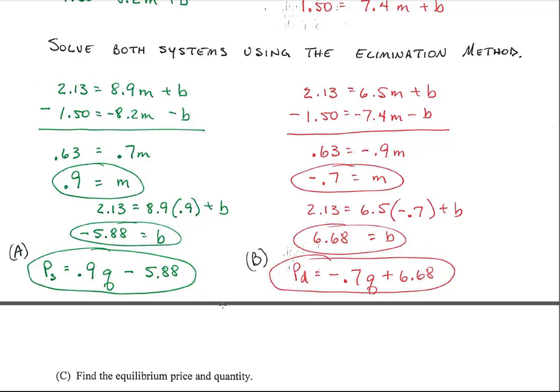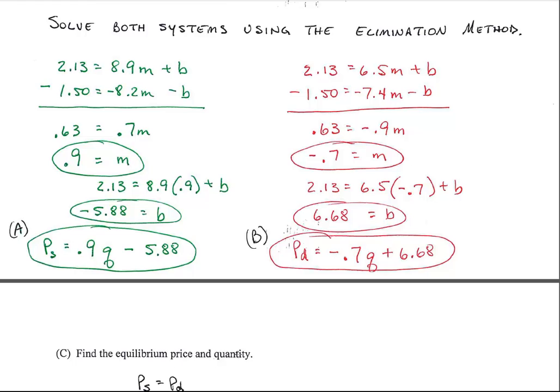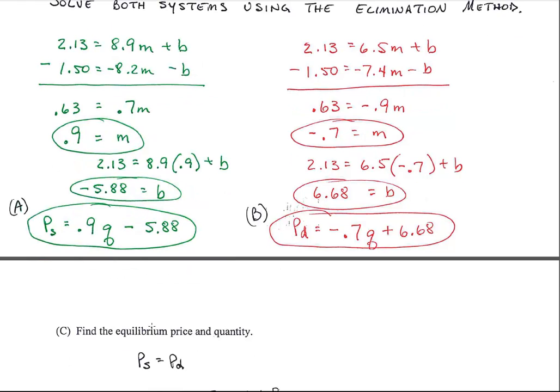So they want us to find the equilibrium price and quantity. In the A part they wanted us to find the supply equation, and in the B part they wanted us to find the demand equation. With that, I can then find the equilibrium price and quantity because equilibrium means when they're equal.